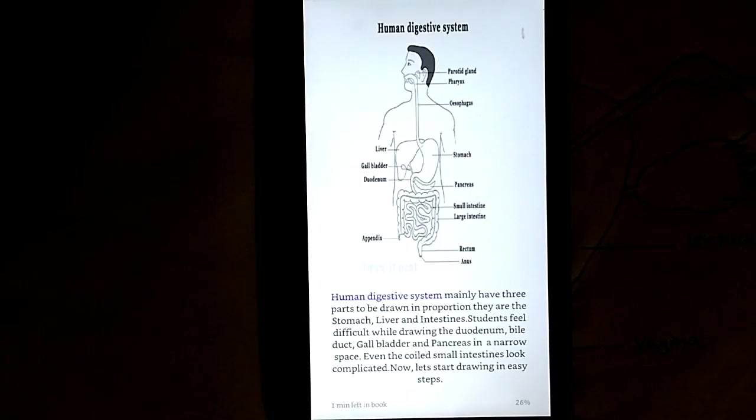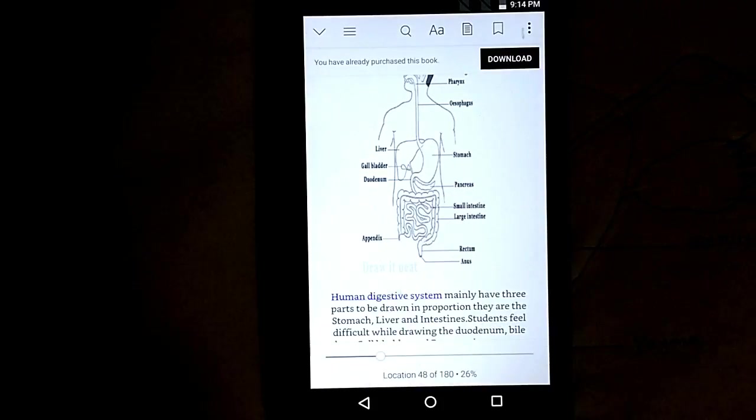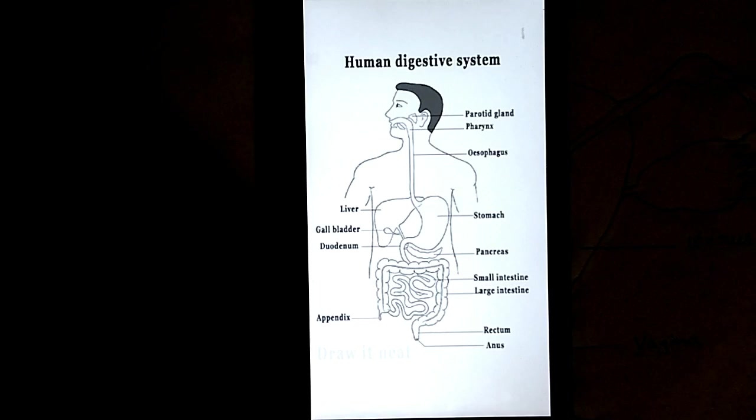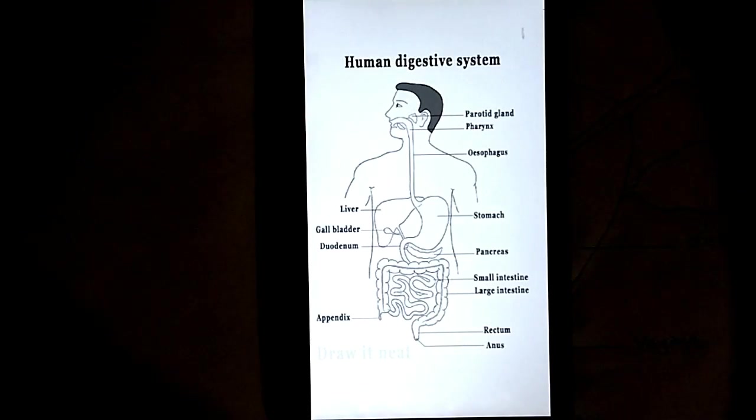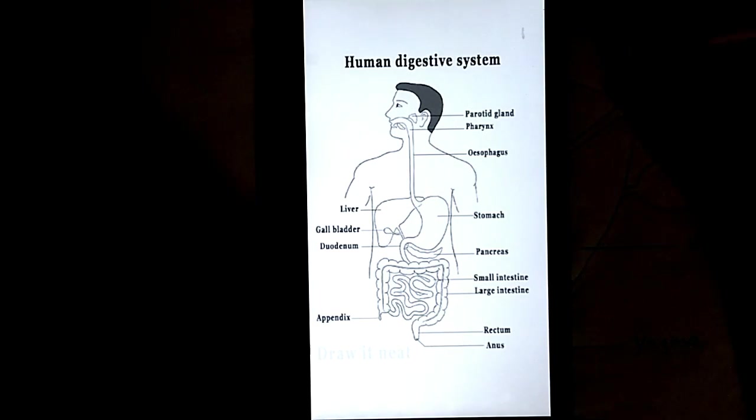So in this ebook, you have 18 different diagrams which you can learn in easy steps. The first diagram is the human digestive system. So the human digestive system is a bit complicated, students, because it has so many parts.